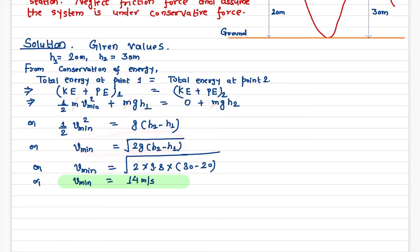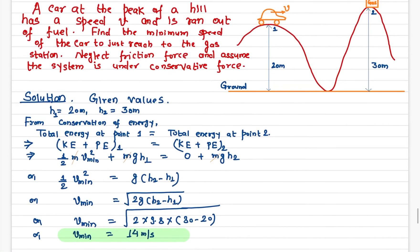This turns out to be a very simple equation: √(2g(h₂ - h₁)). The g value is 9.8, h₂ is 30 meters, and h₁ is 20 meters. If you do the math, the minimum speed is 14 meters per second.